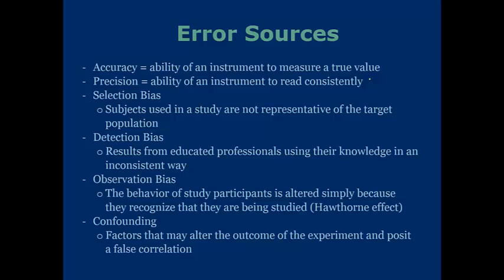Observation bias states that the behavior of study participants is altered simply because they recognize that they are being studied — the Hawthorne effect. To put this more simply: when you visit your parents, you most definitely act differently than you do with your friends. That's observation bias in play. Confounding refers to factors that alter the outcome of the experiment and posit a false correlation, skewing your dependent variable and the results you'll see from your experiment.